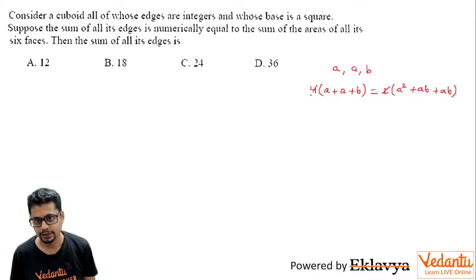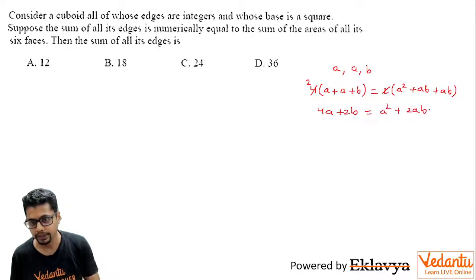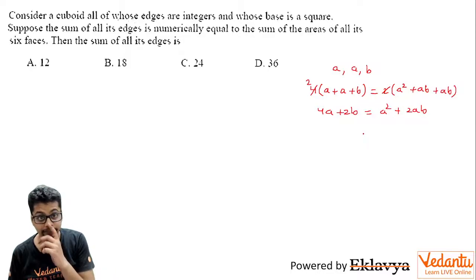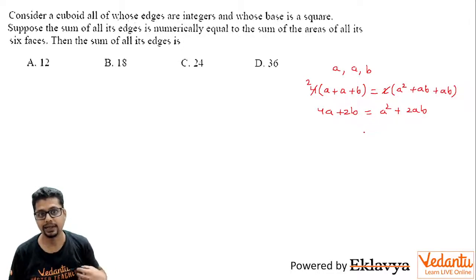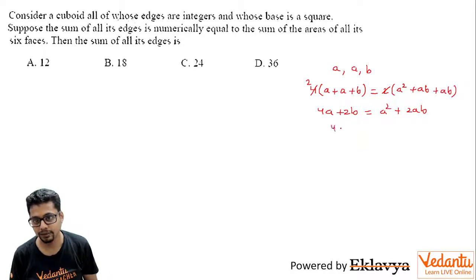So what you get is 4A + 2B = A² + 2AB. Now here A and B are supposed to be integers, and since they are lengths, they are positive integers. So A and B are at least 1. So you may say 4A - A² = 2(A - 1)B.